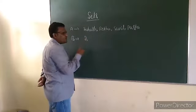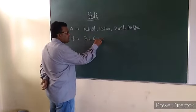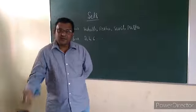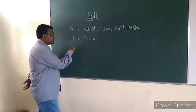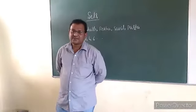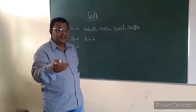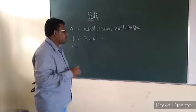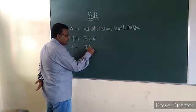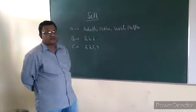That means: 2 times 1 is 2, 2 times 2 is 4, 2 times 3 is 6, and so on. And person C collected prime numbers less than 10 — that means 2, 3, 5, 7.